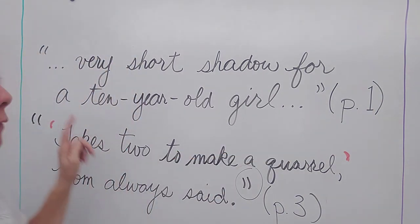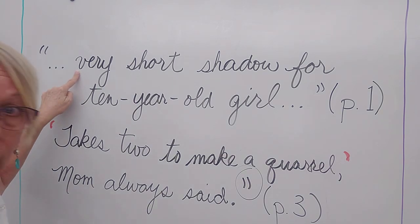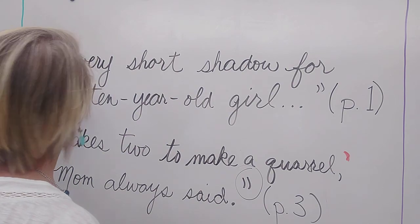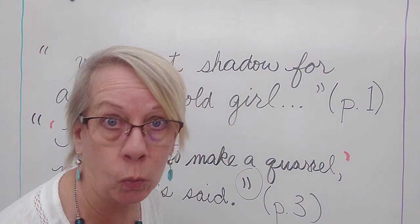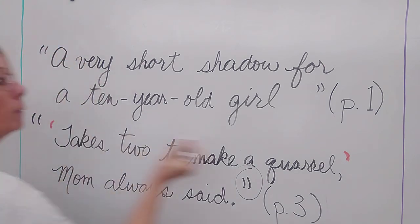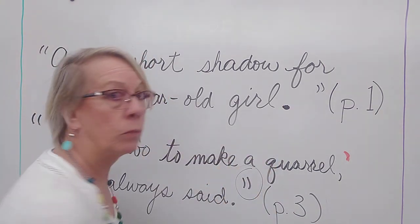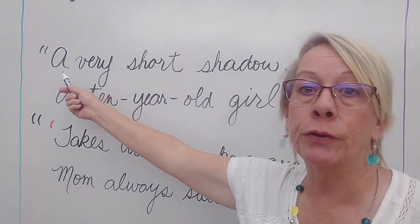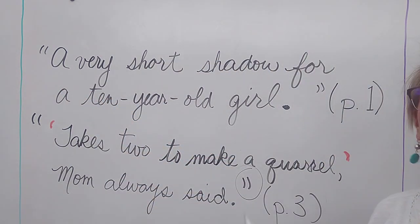Now if this had been the beginning of the sentence, or let's say the sentence was a very short shadow for a ten-year-old girl, and that was the whole sentence, then it would look like this. No ellipses, no ellipses, capital letters at the beginning of sentences, and that would be it.